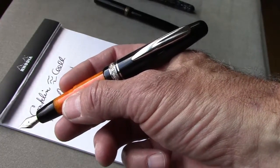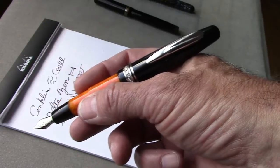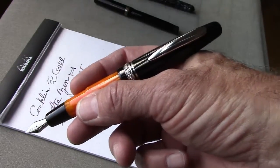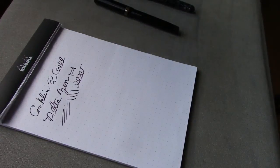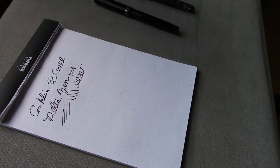So when that fill is empty, I will probably go to an Iroshizuku ink to fill it out. So last but not least is the Swan Eternal.